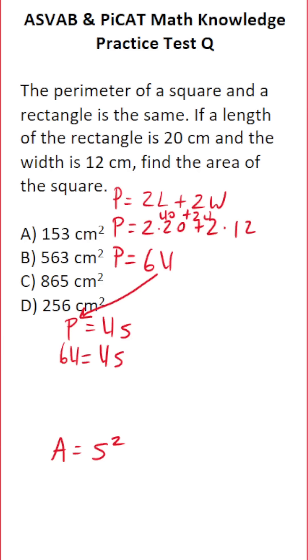Now we can solve for S by dividing both sides by 4. 64 divided by 4: 4 goes into 6 one time, 4 times 1 is 4, 6 minus 4 is 2. Drop down the 4. 4 times 6 is exactly 24 with no remainder. So the side length of our square is 16. Now we can find the area of the square.